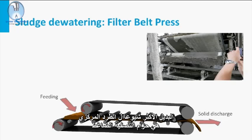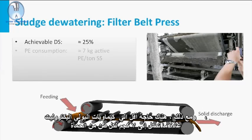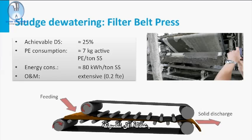The most common alternative to centrifugation is the filter belt press. Also with a filter press, a dry solids content of about 25% can be achieved. However, less PE chemicals are required, generally up to 7 kilograms per ton sludge. The energy consumption is also a little bit lower, reaching 80 kilowatt hours per ton SS, and less personnel is required for maintenance.